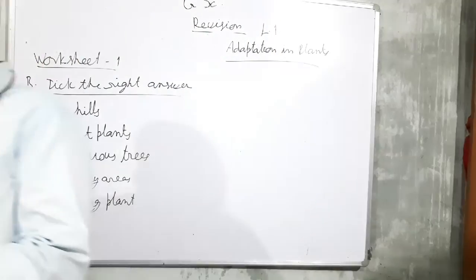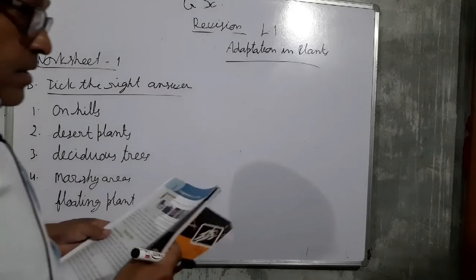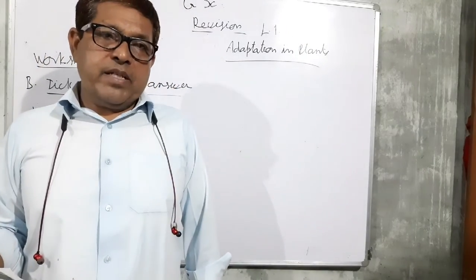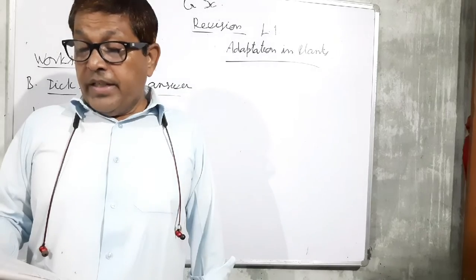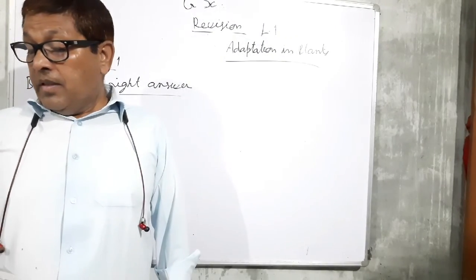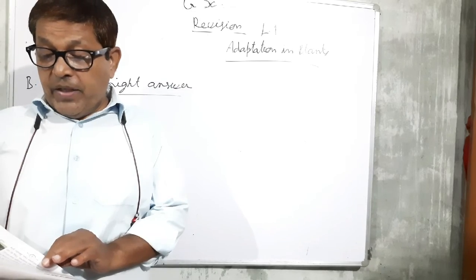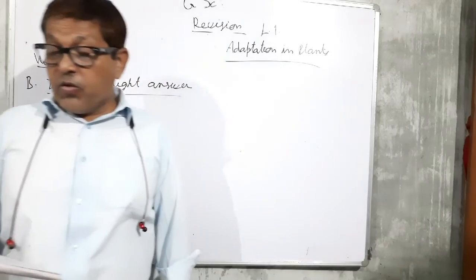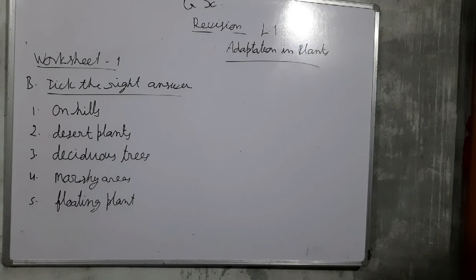Next question: what are terrestrial plants? Classify them by giving an example of each. Plants found on the land are called terrestrial plants. Terrestrial plants are categorized into many categories: plants growing on the hills, growing in the desert, plants growing in the plains, plants growing in the coastal areas, and plants growing in the marshes. These are the different types of plants found on land.